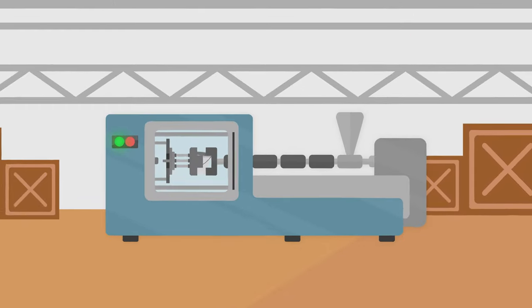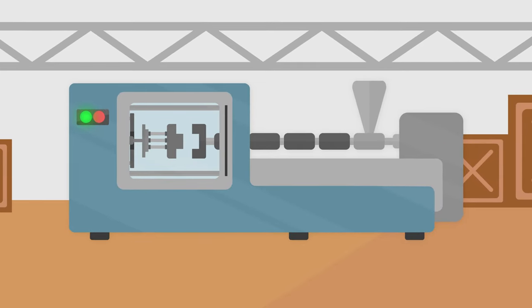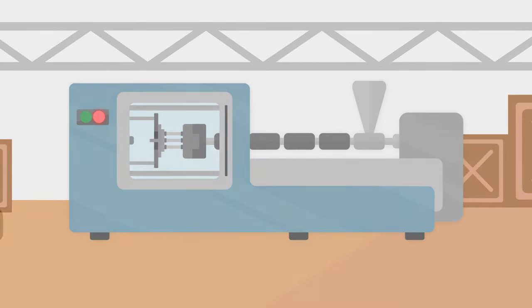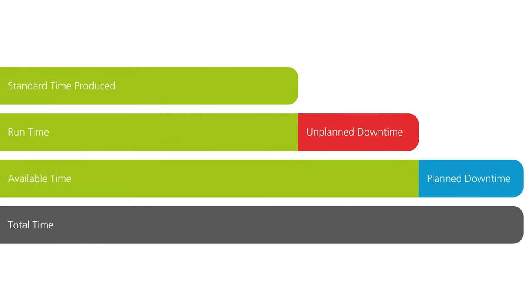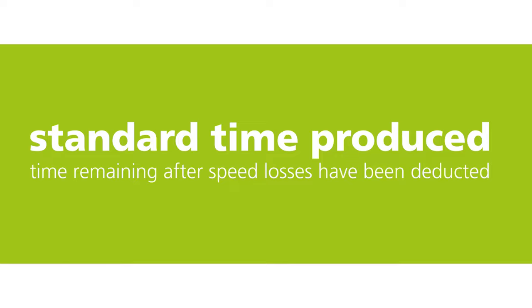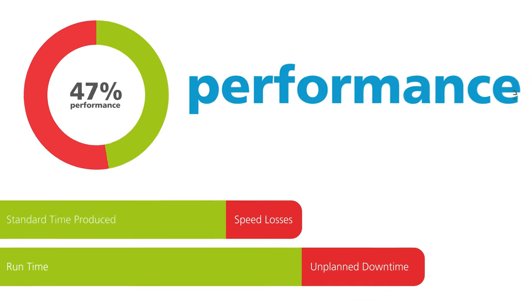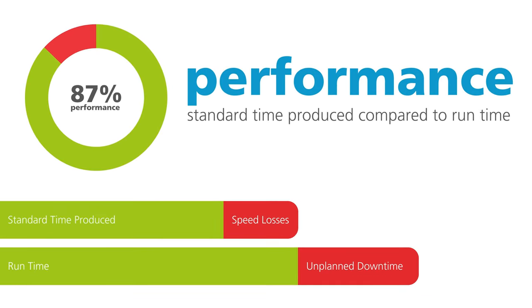On the next step up we take into account how fast your machines were running. If they ran slower than the intended rate, then we subtract any time wasted due to speed losses. The remaining time after speed losses have been taken into account is known as your standard time produced. The ratio of standard time produced to runtime gives us our performance score.